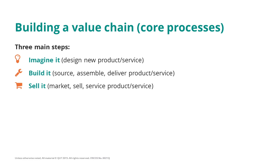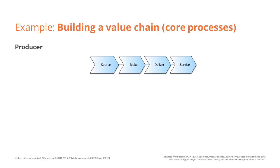A typical value chain for a producer would look like this: source, make, deliver, and service. Value chains can be used not only to help us establish the order relationships between processes — like upstream and downstream — but also to identify the various specialisations available for a given process. In fact, this specialisation relation can be applied at the level of the whole value chain.